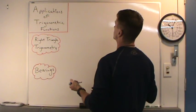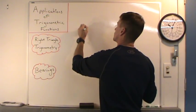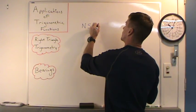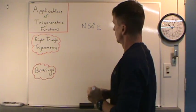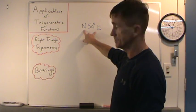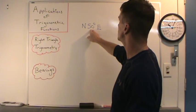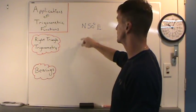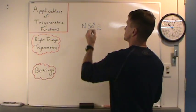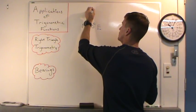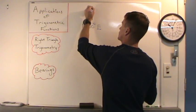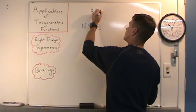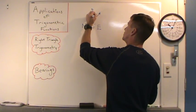Let me give you some examples. Say N 50 degrees E — this is a bearing, and we read this as 50 degrees east of due north. It indicates the direction 50 degrees east of due north. To sketch this angle, start by drawing due north, go straight up, and then go 50 degrees east. There's that 50 degree angle right in there.